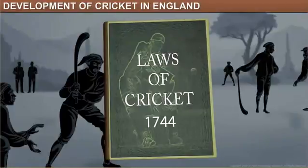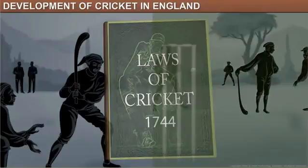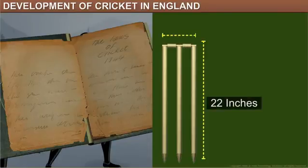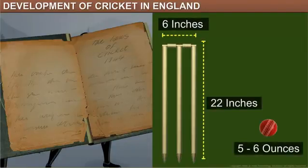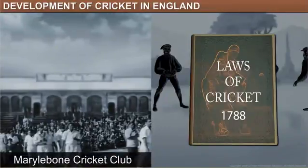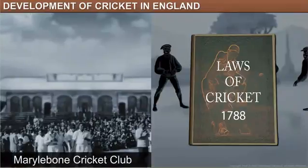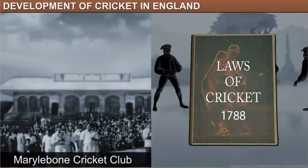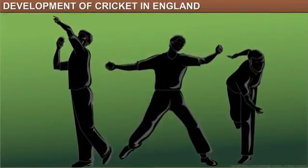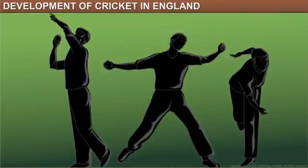These oddities occurred because cricket was the first game to lay down rules and regulations. The laws of 1744 specified the dimensions of the stumps and the weight of the ball, but said nothing about the shape and size of the bat. The Marylebone Cricket Club, which was formed in 1787, revised the laws, which gradually made cricket a more skillful game.